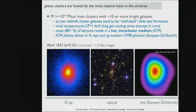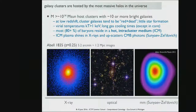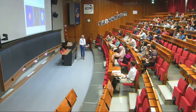In galaxy clusters, because of the deep potential well, the densities are high and the temperatures are high. You can observe this baryonic phase through a couple of different channels. One is that the plasma emits X-rays — bremsstrahlung and line emission from a thermal plasma. This is an X-ray image of Abell 1835 at redshift 0.25. In the optical image, you see a big central galaxy and a bunch of other galaxies that appear yellow but are really red, containing old stellar populations that emit mostly in the redward side of the optical bands.